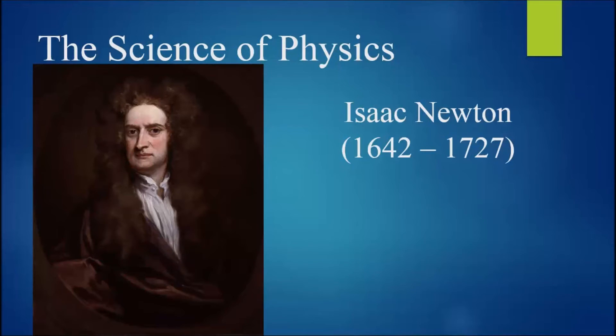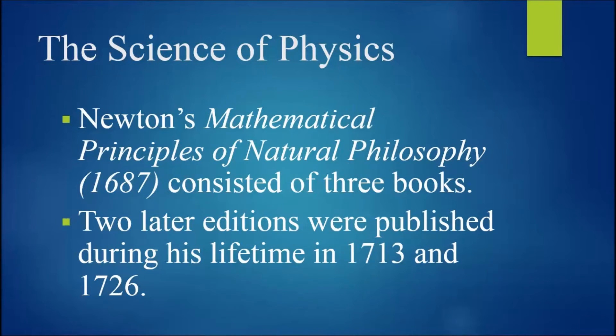The first colossus of physics, Isaac Newton, lived between 1642 and 1727. Newton was born the same year that Galileo died. Newton's Mathematical Principles of Natural Philosophy, which was first published in 1687, consisted of three books. Two later editions were published during his lifetime in 1713 and 1726.